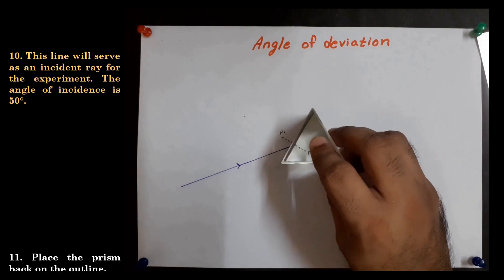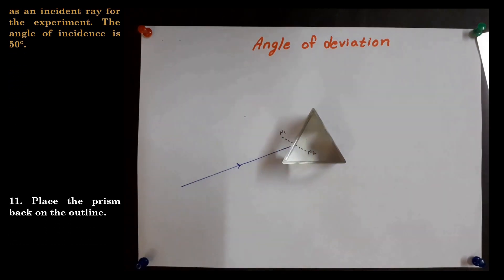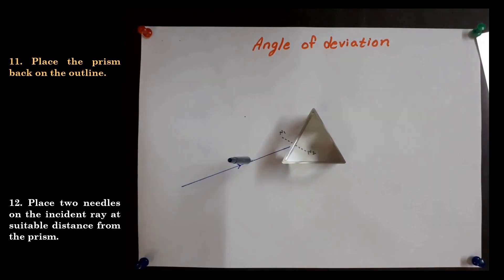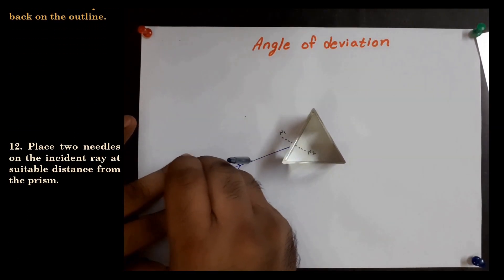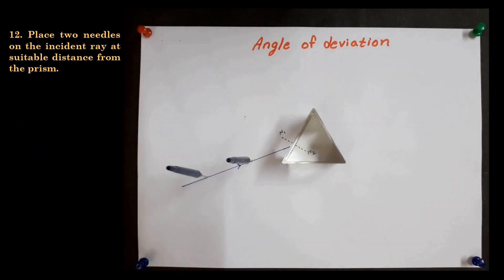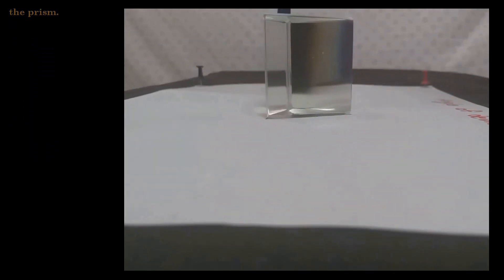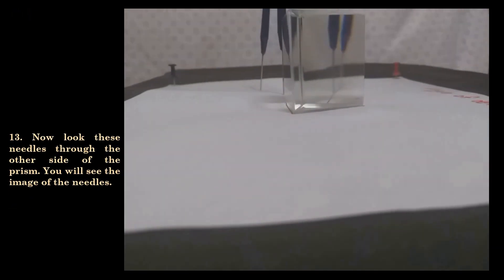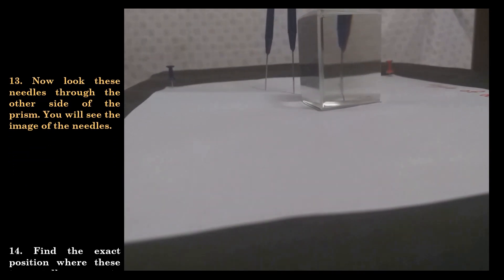Now place the prism back on the outline. Place two needles on the incident ray at suitable distance from the prism. Now look at these needles through the other side of the prism. You will see the image of the needles.